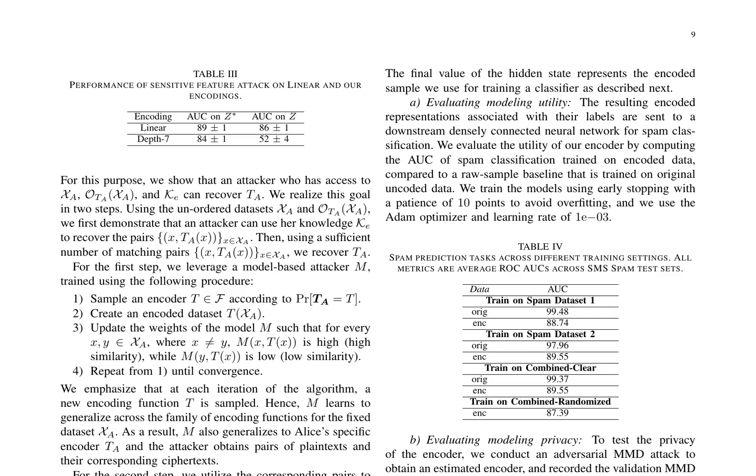PEOPL, a novel approach to private encoding, leverages a key-based encoding scheme to protect sensitive data while maintaining utility for downstream machine learning tasks.